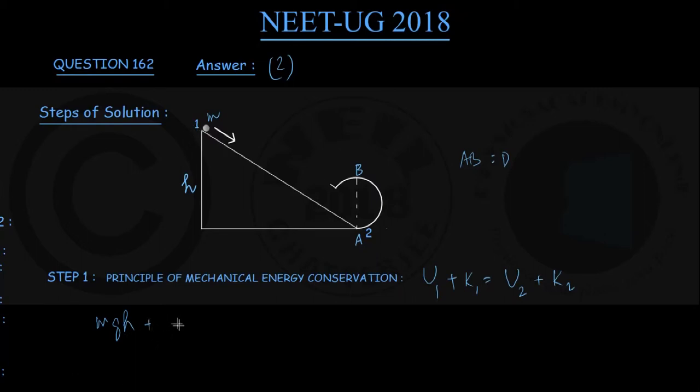Since starting from rest, initial kinetic energy is 0. Coming to right hand side, which is the bottom, there is the reference plane. We assign a potential energy of 0 there, so U₂ is 0. If the speed acquired by the body is V here at point 2, kinetic energy is coming out to be ½mV².